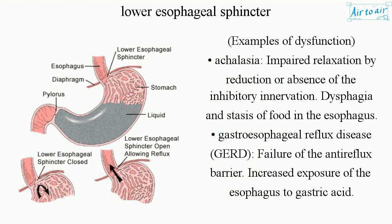Examples of dysfunction: Achalasia — impaired relaxation due to reduction or absence of inhibitory innervation, causing dysphagia and stasis of food in the esophagus. Gastroesophageal reflux disease (GERD) — failure of the anti-reflux barrier, resulting in increased exposure of the esophagus to gastric acid.